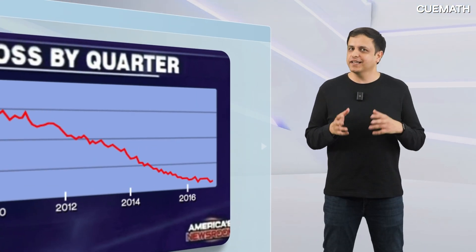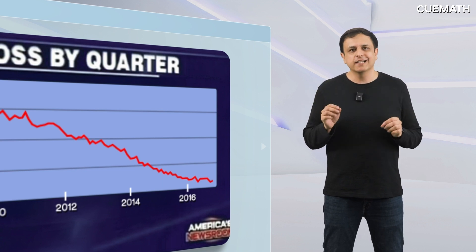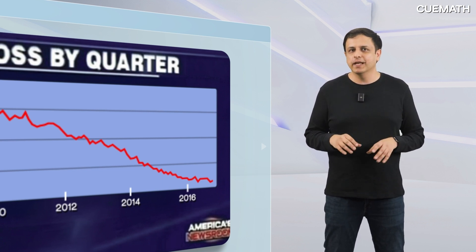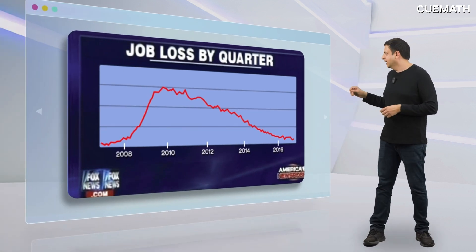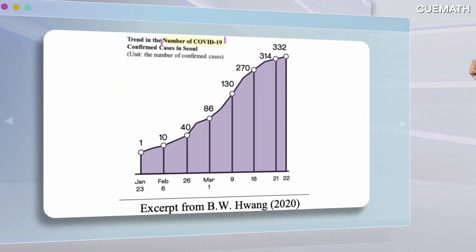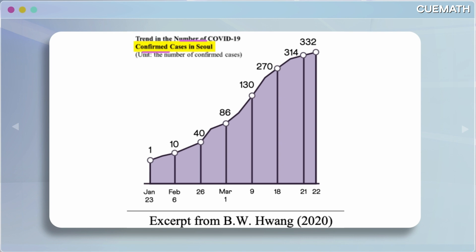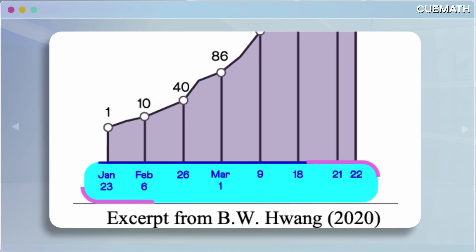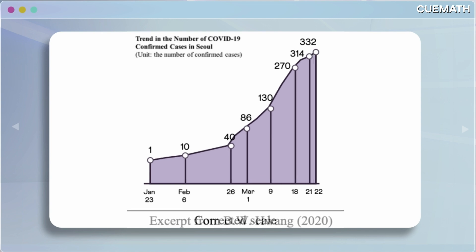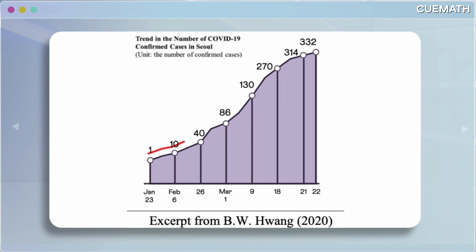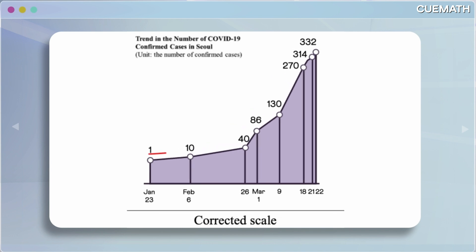These sneaky tricks can deceive us, and they aren't just in ads and politics — they can downplay even serious issues like a pandemic. This graph shows the number of COVID cases in Seoul on different dates. Notice the random intervals: 14 days, 20 days, and 1 day — an uneven scale on the X-axis. Fix that and the graph looks completely different. Originally it seemed like cases were rising slowly, when they were actually doubling.